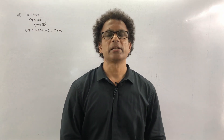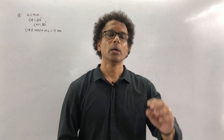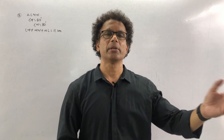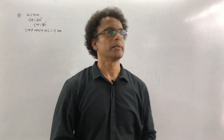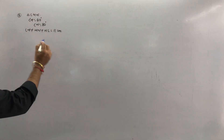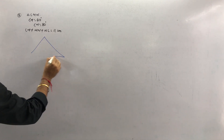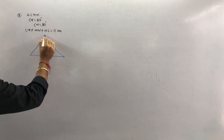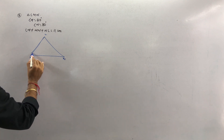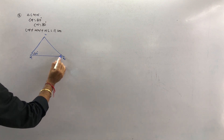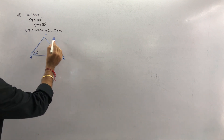Now check the last sum of this exercise — exercise 4.3, sum number 3. It is exactly the same as the first and second sums, just for practice. They have given: draw triangle LMN, where angle M is equal to 60° and angle N is equal to 80°, and the perimeter is 11 cm.